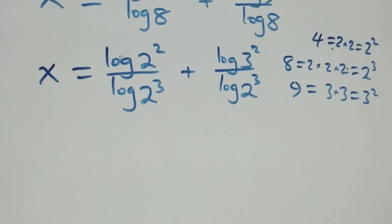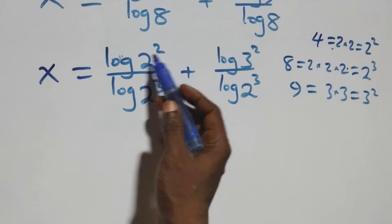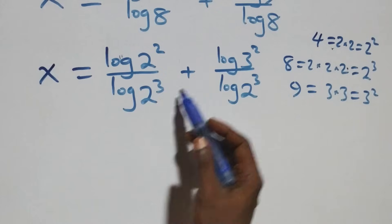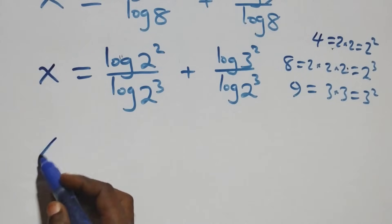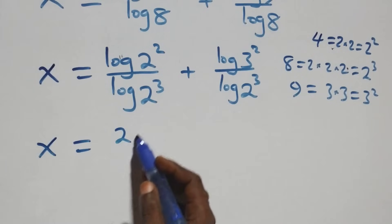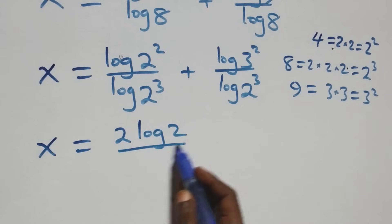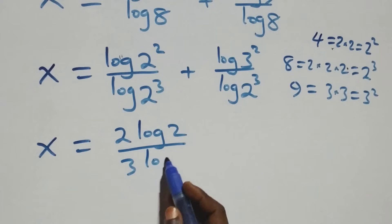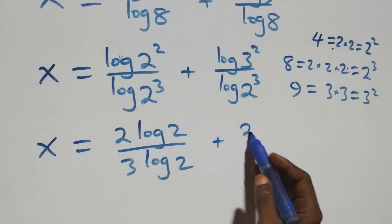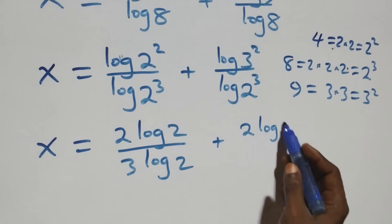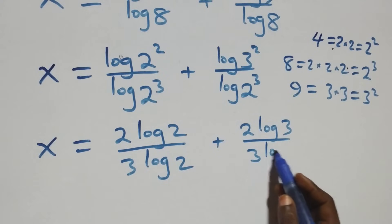Next, we apply the power rule of logarithms to each term. Bringing the exponents down, we get x equals to 2 log 2 over 3 log 2 plus 2 log 3 over 3 log 2.